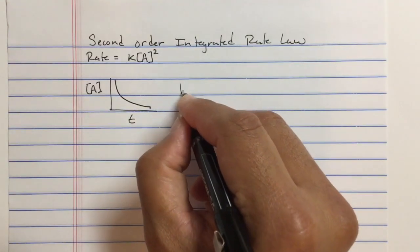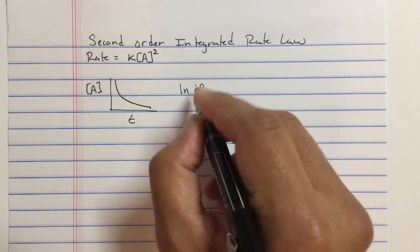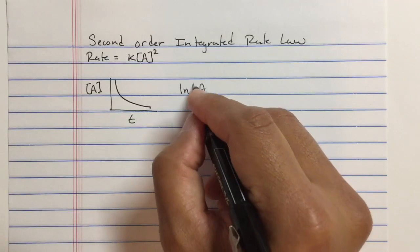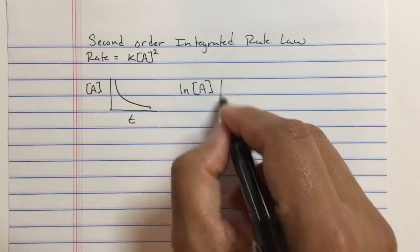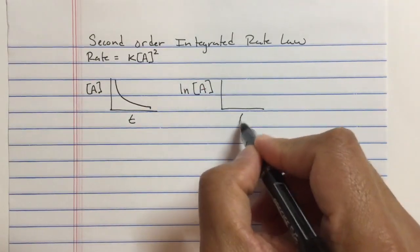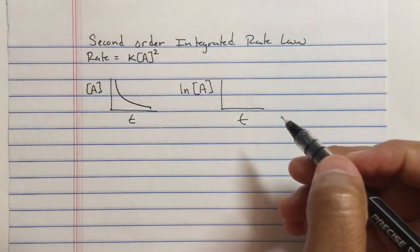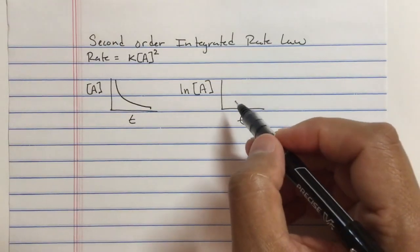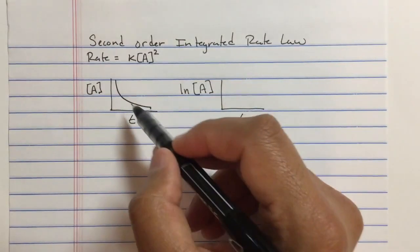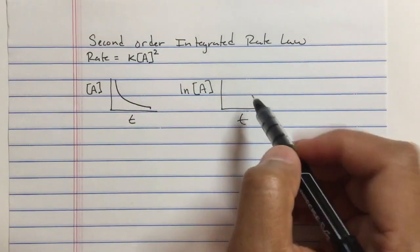Remember what we did here. If you remember that first order integrated rate law video, we take the natural log of [A] versus time, and sometimes this gives us a straight line. Sometimes the data here will straighten out, and this gives us a straight line.